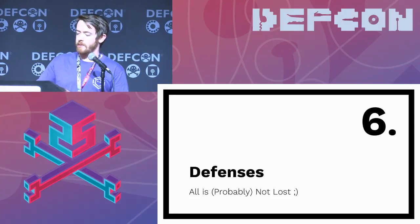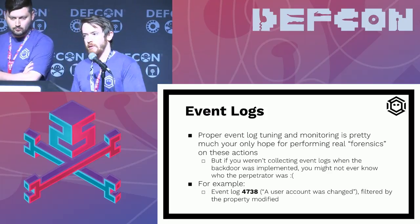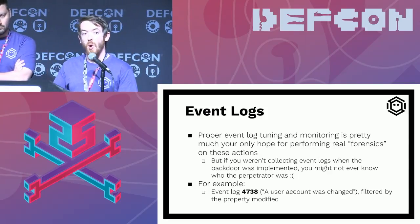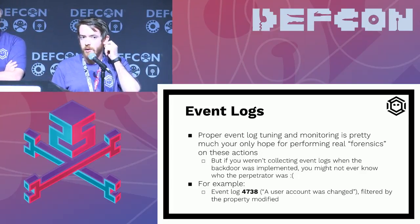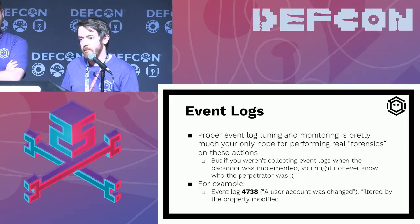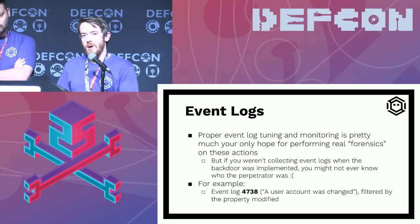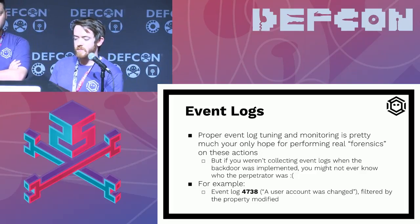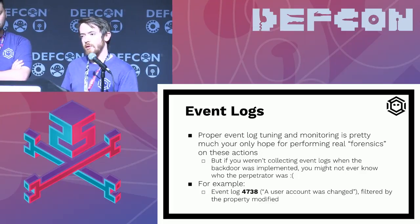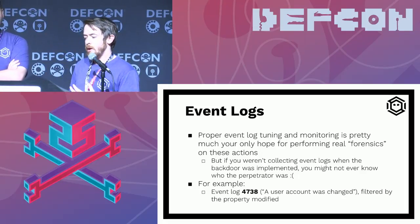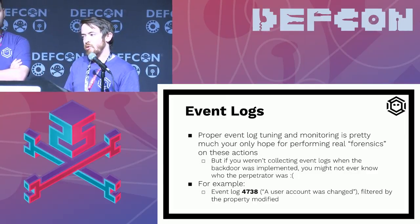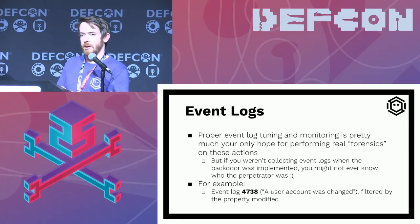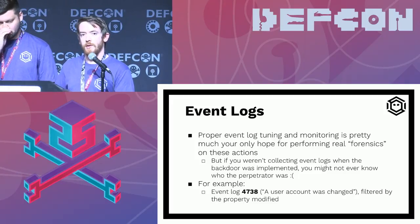Defenses — all is not lost. The problem with these backdoors is you need event log auditing turned on at the moment the misconfiguration is introduced. If it was introduced ten years ago and you don't have ten years of event log data, you're not going to figure out who put it in — assuming you can even find it and determine it's malicious. To stop these from being put in in the future, there are event log IDs like 4738 (user account was changed) that you can filter by the particular property modified. You don't need to monitor every possible change — just the object takeover primitives we talked about. A blog post with complete defensive guidance for every ACL-based takeover primitive will be released in coming months.